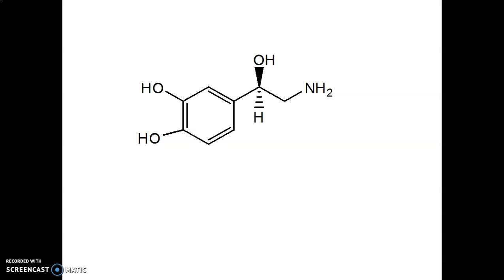Another example: assigning priorities — OH gets first, the benzene ring gets second, CH2NH2 gets third, and hydrogen gets fourth, the least priority. The lowest priority group is already on the dashed line, so no exchange is needed. Going from 1 to 2 to 3 is in the anti-clockwise direction, so the answer is S.